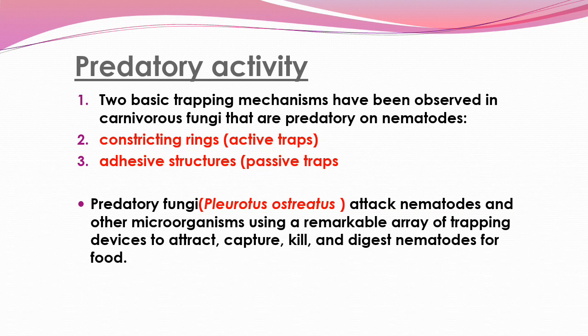They can be found in forests in subtropical and temperate climates. Regarding predator activity, two basic trapping mechanisms have been observed in carnivorous fungi that are predatory on nematodes: constricting rings as active traps, and adhesive structures as passive traps. Predatory fungi attack nematodes and other microorganisms using a remarkable array of trapping devices to attract, capture, kill, and digest nematodes for food.